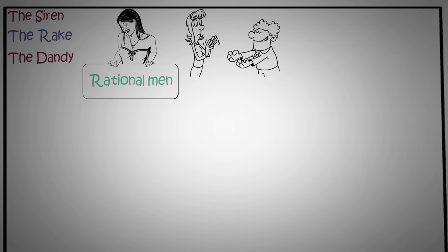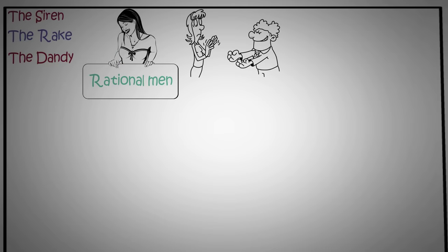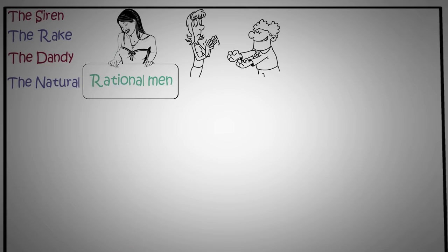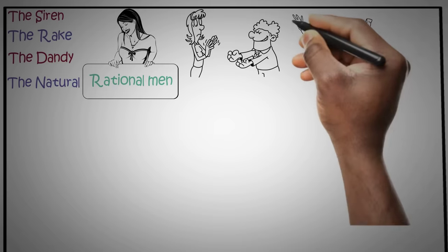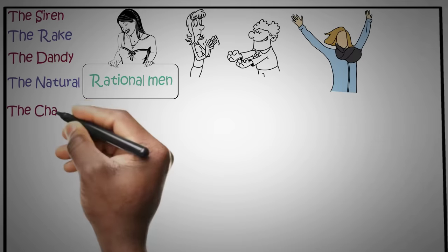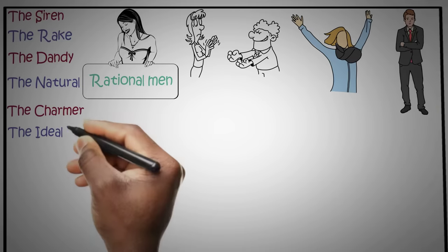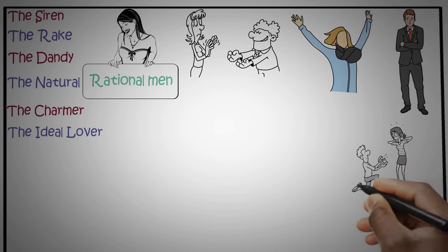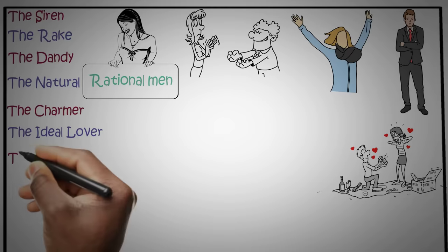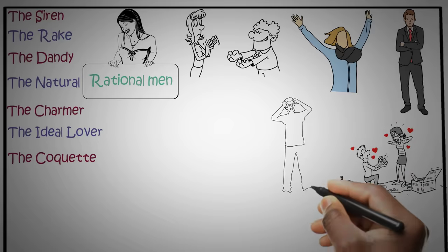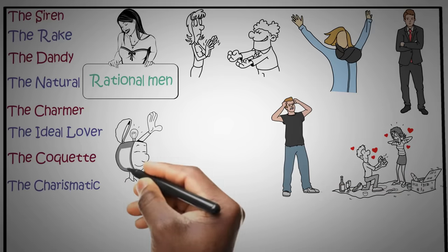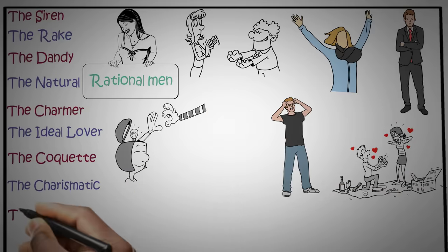The Dandy: a gender bender who dabbles in a bit of both. The Natural: the playful, carefree one who brings joy. The Charmer: flattery experts who boost egos. The Ideal Lover: they give you what you desire most in life. The Coquette: a tease who keeps you guessing. The Charismatic: extraordinary charisma that's hard to resist. The Star: real and unreal, they're a captivating mix.